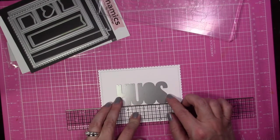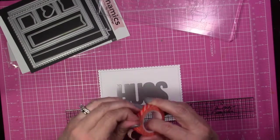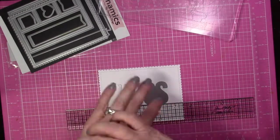Once I have that down, I'm going to run that through my Big Shot and that's going to cut the sentiment out from the center of the panel.